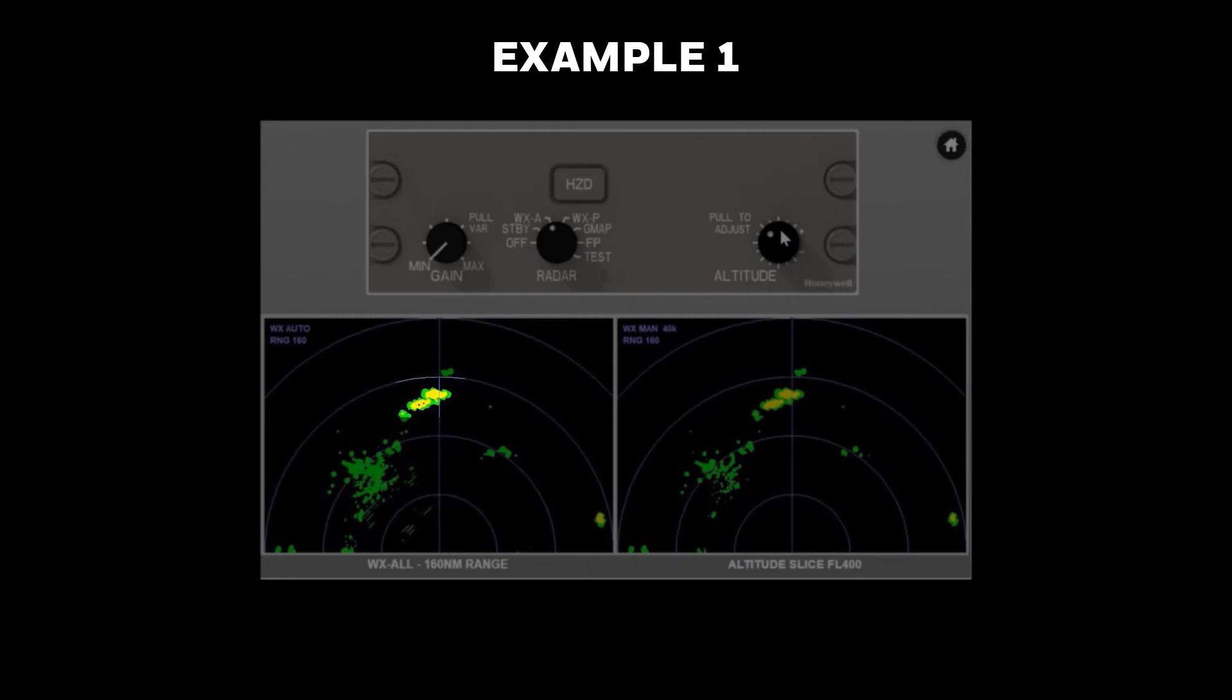The apparent increase in reflectivity from the previous display is caused by two factors. One, the radar is now able to distinguish the difference between weather reflectivity and ground clutter as the aircraft gets closer to the weather. And two, the radar can now resolve relatively small pockets of higher reflectivity because the beam width resolution is improving.